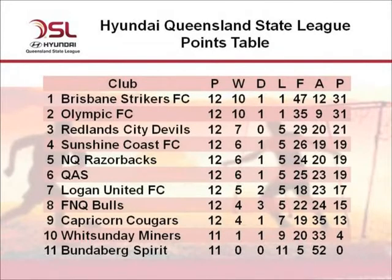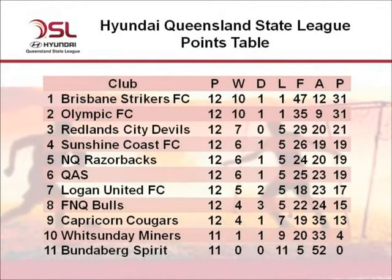FNQ Bulls are still inconsistent on the field but remain in the frame for a top-four spot in their first season, just two points further adrift. Capricorn Cougars drop back to ninth, and Whitsunday Miners and Bundaberg Spirit are a considerable way behind.